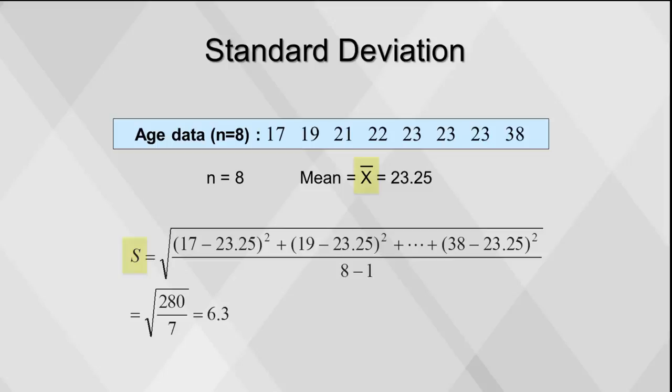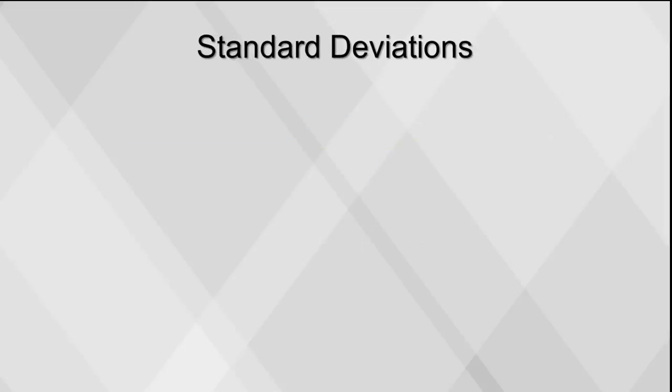The standard deviation is an extremely useful measure. It tells us how close or far apart data are from the mean. The higher the standard deviation, the greater the spread of the data.